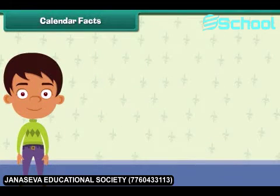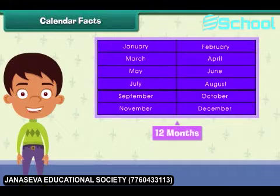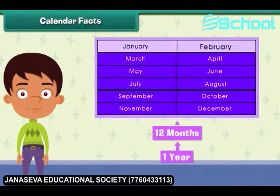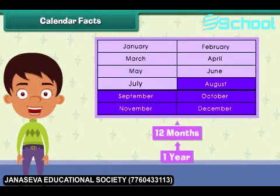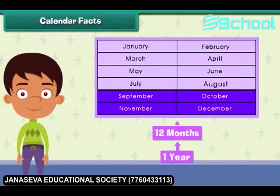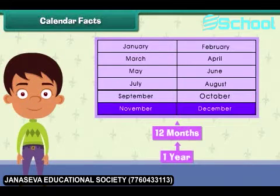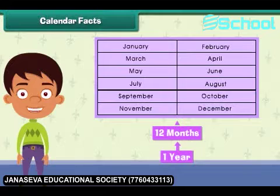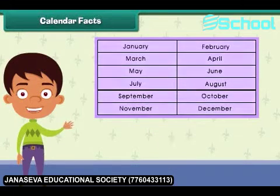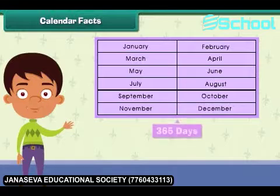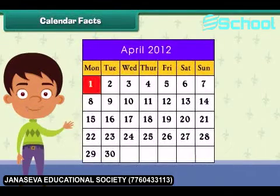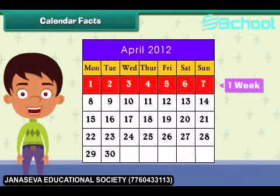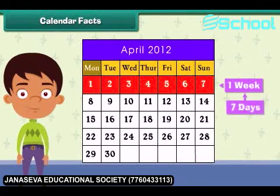There are 12 months in a year: January, February, March, April, May, June, July, August, September, October, November, and December. When all the days are counted in a year, it sums up to 365 days. Each month is divided into weeks, and one week has seven days, from Monday to Sunday.